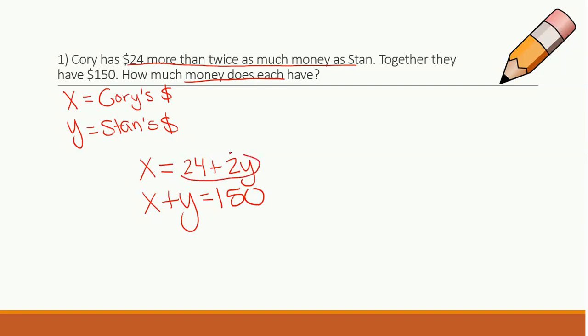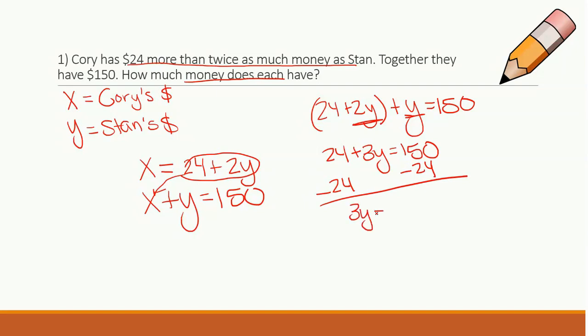So I'm going to take 24 plus 2y and plug it in for my x. So I'm going to have 24 plus 2y for my x, plus y equals 150. So 24 plus, these guys are going to combine, give me a 3y. Let's subtract 24 from both sides. I get 3y equals 150 minus 24, which is 126. So let's divide by 3. So I know y equals 42.